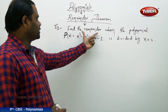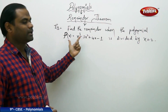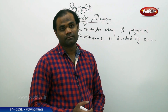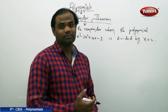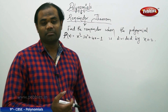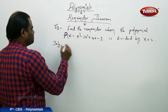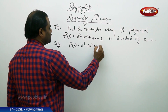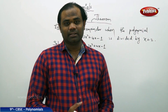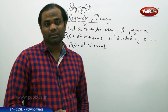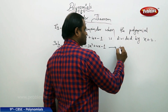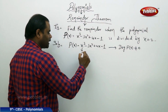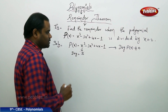The question is clear about finding the remainder when the polynomial x³ minus 3x² plus 4x minus 1 is divided by the linear polynomial x plus 2. The polynomial is given as p(x) = x³ minus 3x² plus 4x minus 1. The first thing I identify is that this is not a constant polynomial. The first condition of the remainder theorem is that the degree of p(x) should not equal zero, and clearly the degree is 3, which is non-zero.